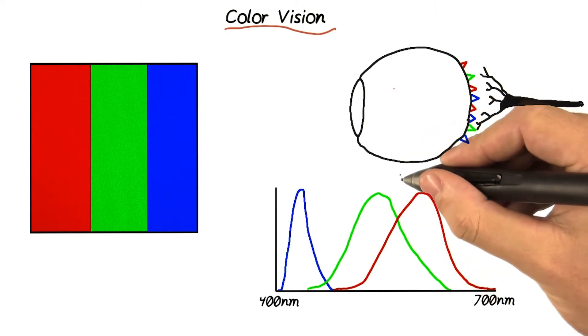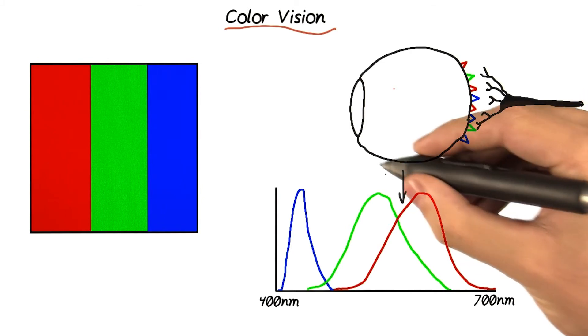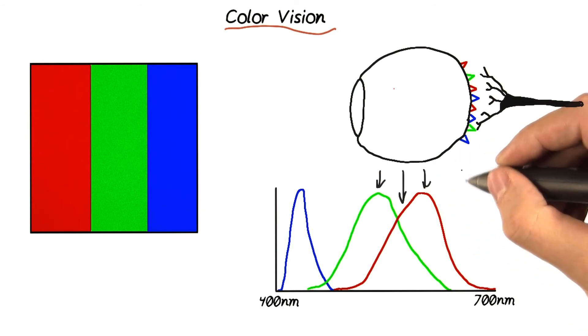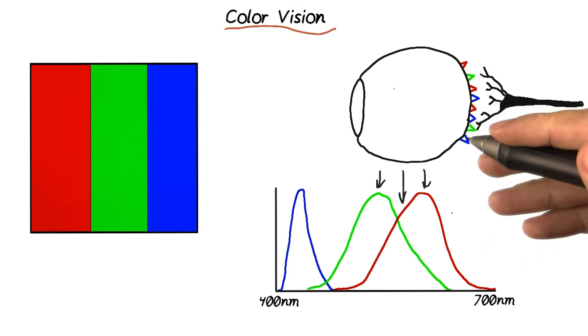It could be a yellow laser where every photon has exactly the same energy, or it could be an even combination of green and red light. The response of the L and M cones is the same either way. So to our brain, it's the same color.